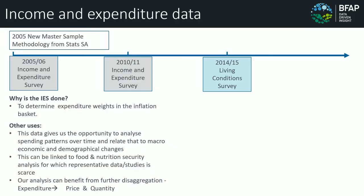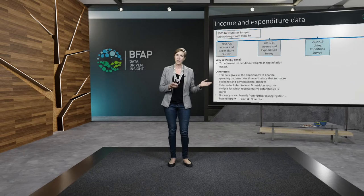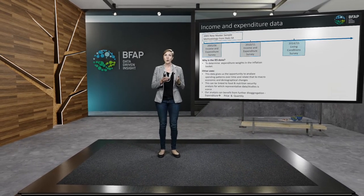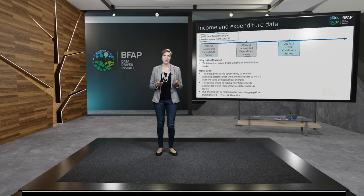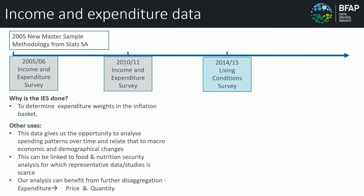Given those differences, I want to move to another Stats SA source that we're frequently using and that adds a lot of value to our consumer economics division: the income and expenditure data. Since 2015, the new master sample has been implemented, and before that we cannot compare the data. But after that, this is one of the very few data sets that helps us track and analyze expenditure data over time.